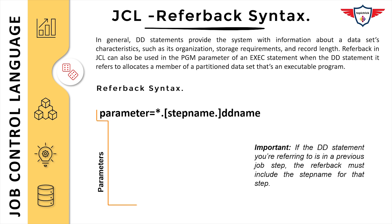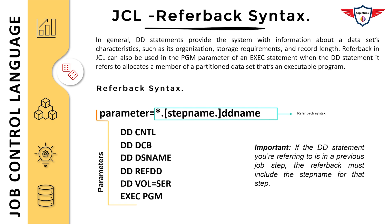The JCL referback syntax is fairly simple and easy to understand. The syntax begins with a parameter name — it could be any of the listed parameters — followed by an equal sign, then an asterisk, then a dot, then the step name dot DD name. The step name is optional and is only required if the DD statement you are referring to is in a previous job step. Otherwise, you can use asterisk dot DD name if you are using the referback statement within the same job step.